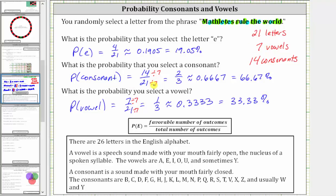One more thing we might recognize here is that if we select a letter, it has to be a consonant or a vowel, and therefore we could have found the probability of a vowel by taking one and subtracting the probability of a consonant. I hope you found this helpful.